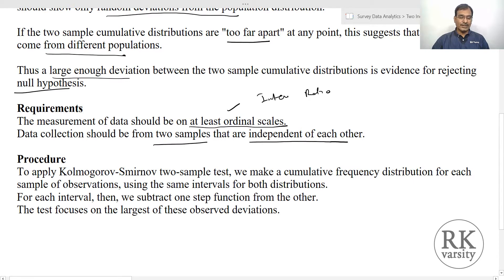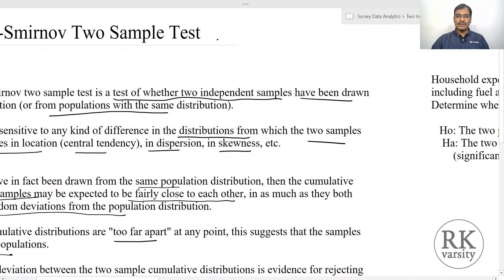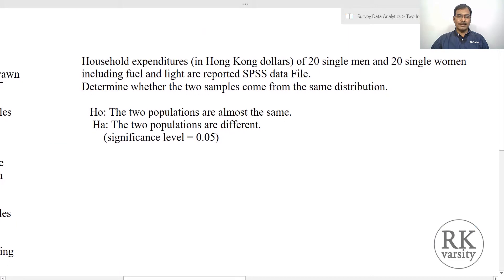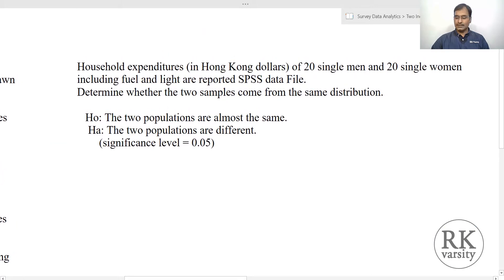Here is the procedure. With two examples, I will show you how to calculate this using IBM SPSS. Here is one example borrowed from a textbook. Household expenditures in Hong Kong dollars of 20 single men and 20 single women, including fuel and light charges, are reported in an SPSS data file.